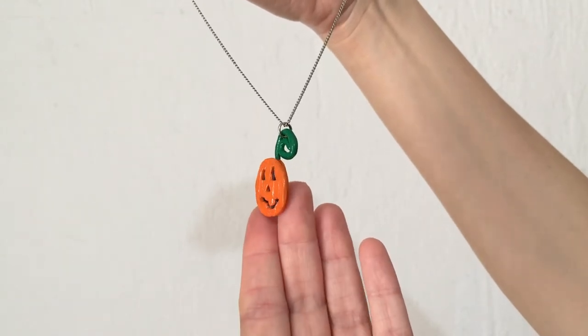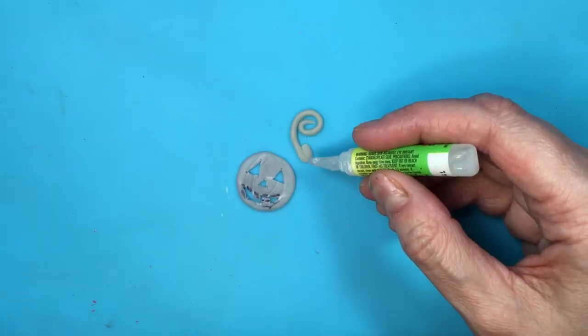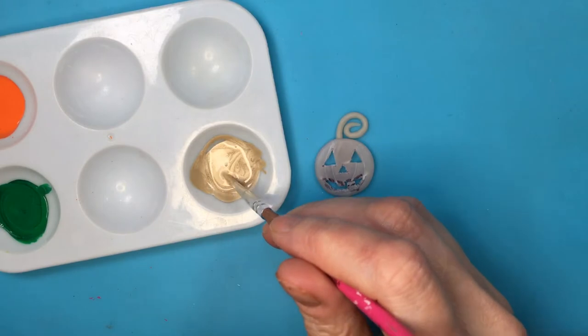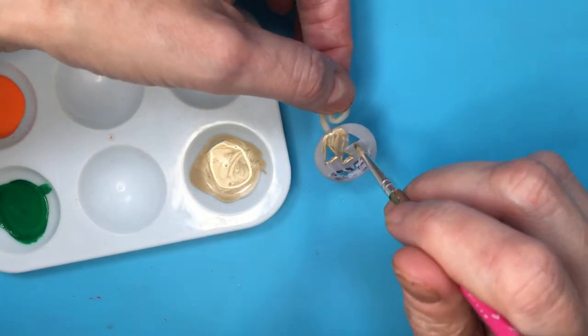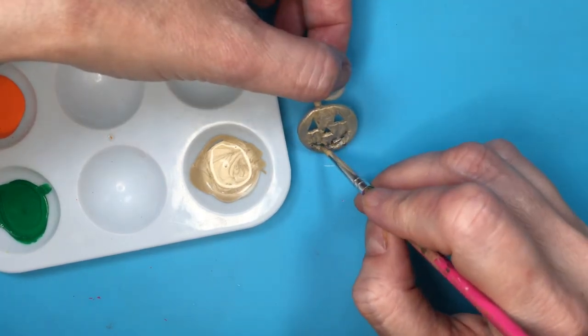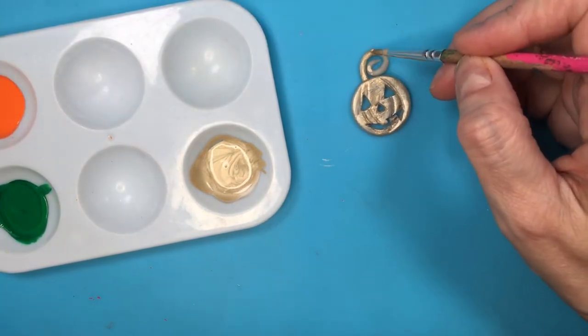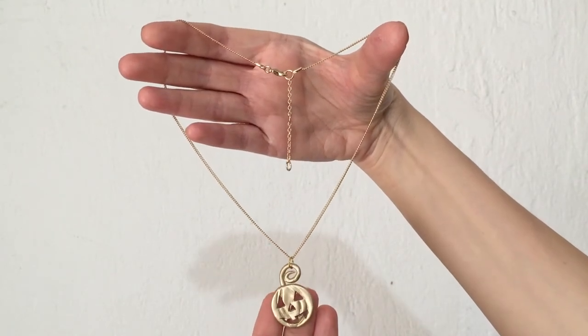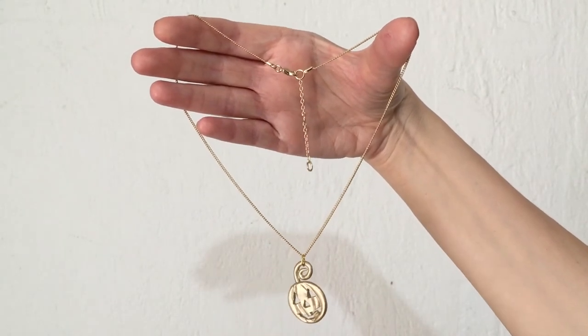For my next one I'm going to be gluing my two pieces of clay before painting them. To paint them I'm going to be using this gold that I customized. I just wanted to make a gold Halloween pumpkin because I think they look really cute. I did the same thing with my jump ring and my chain, but in this case I'm using gold jump ring and chain. This is what it looks like. I really like it too.